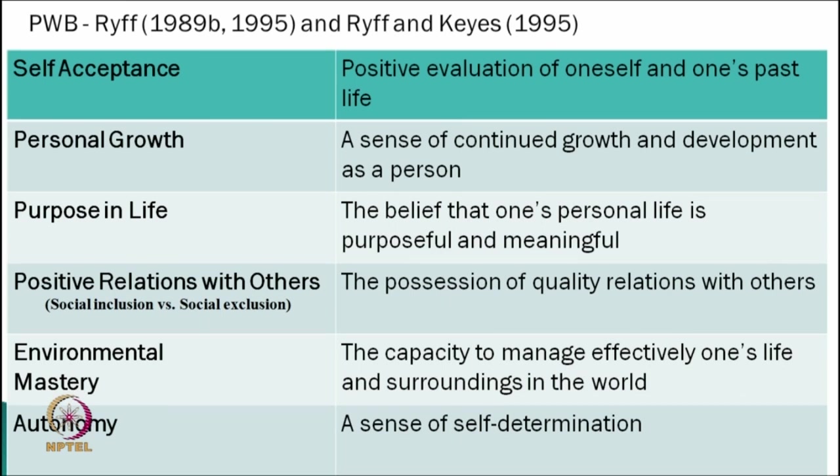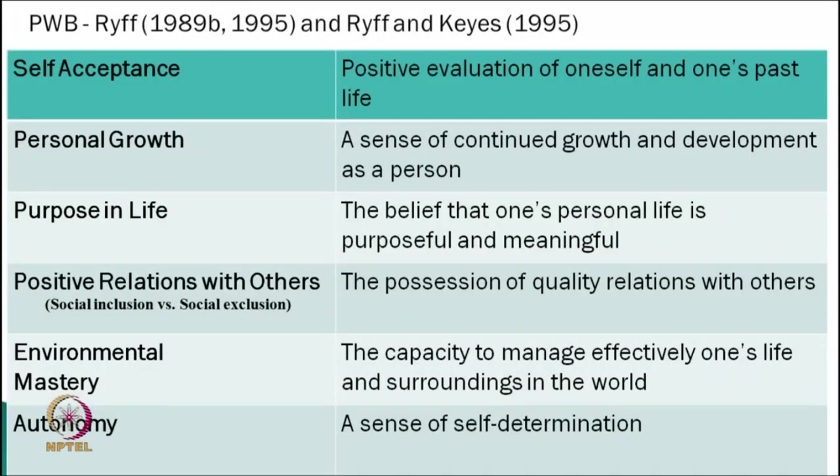Even in new reports, cross-cultural research, and world happiness reports, they take into account social inclusion versus social exclusion. If you perceive you are not part of your community or society, that is social exclusion. If you perceive you are very much part of your community and society, that is social inclusion. Social inclusion is positively correlated with happiness. The fifth factor is environmental mastery — the capacity to manage one's life and surroundings effectively.